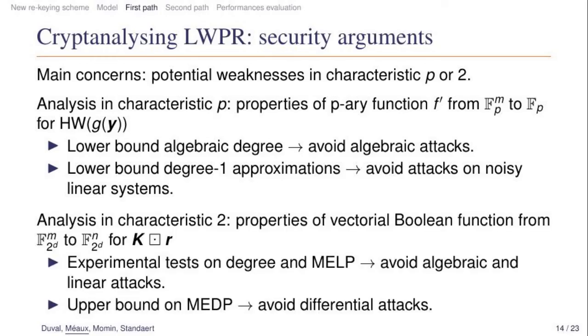Then for the analysis in characteristic 2, we study the vectorial Boolean function which corresponds to the multiplication of k times r when it is embedded over F2. We could perform some experimental tests on the degree and on the maximum expected linear probability of small cases. And in this example we showed that the parameters are sufficient to avoid the attacks, so we can avoid the algebraic and linear attacks in this case. Finally, for the maximum expected differential probability, we were able to prove an upper bound on it, and so it is sufficient to prevent the differential attacks.